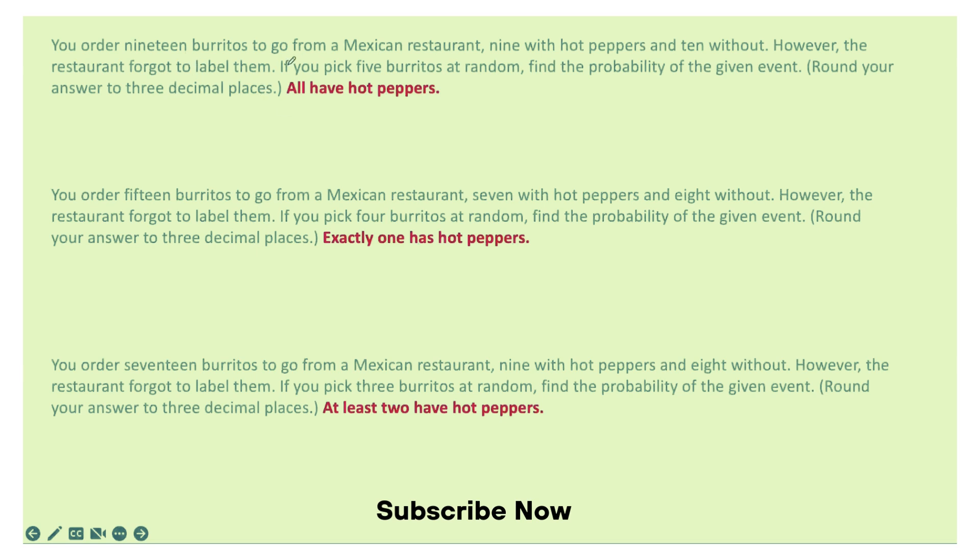For these problems, it says you order 19 burritos to go from a Mexican restaurant, 9 with hot peppers, 10 without. However, the restaurant forgot to label them. If you pick 5 burritos at random, find the probability of the given event.